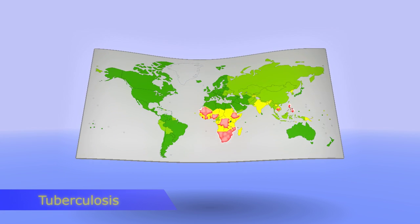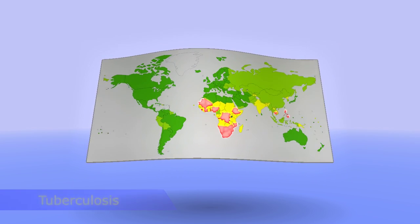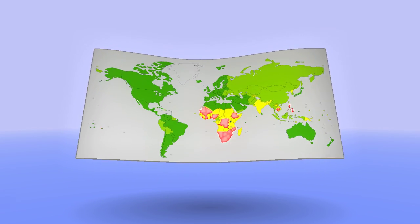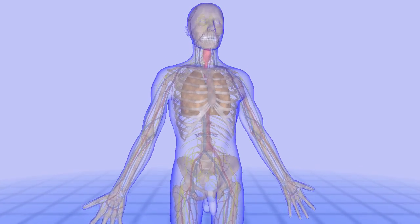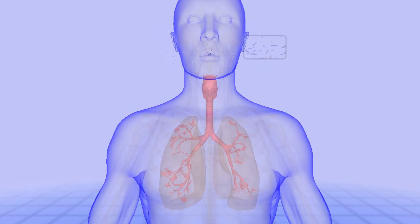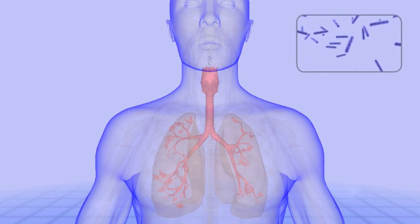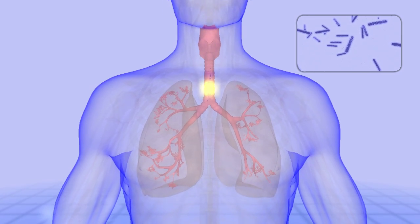Tuberculosis kills millions of people every year, particularly in the developing world. It results from infection with an airborne bacillus, Mycobacterium tuberculosis, and as few as one or two bacilli are sufficient to cause the disease.